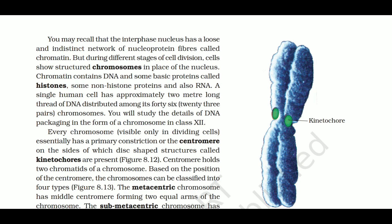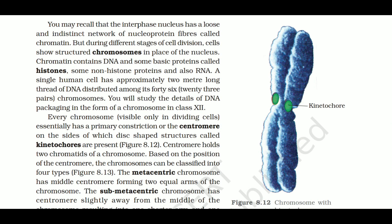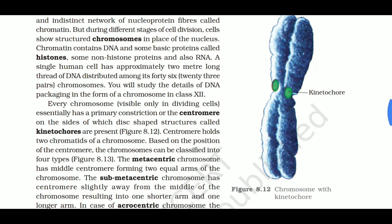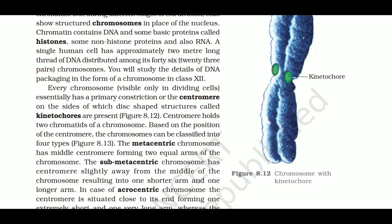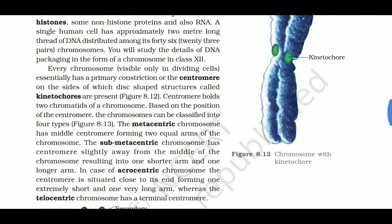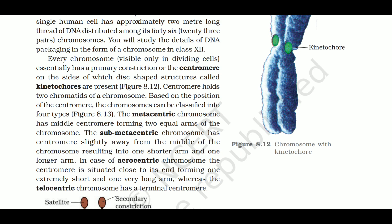Chromatin contains DNA and some basic proteins called histone proteins; non-histone proteins and RNA are also present. The interphase nucleus has a loose and indistinct network of nucleoprotein fibers called chromatin, but during cell division, structured chromosomes are visible. A single human cell has approximately 2 meters of threaded DNA distributed among its 46 chromosomes (23 pairs).